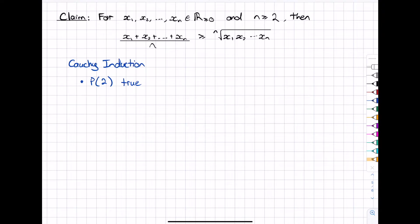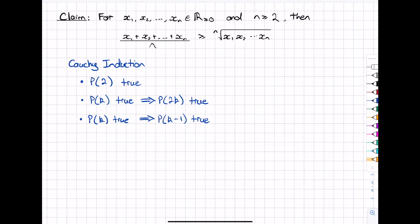The next step is where things differ. In regular induction we assume that if p of k is true then p of k plus 1 is true — we're proving p of k plus 1 conditionally on p of k. In Cauchy induction it's different: we show that if p of k is true then p of 2k is true. And then Cauchy induction has an extra step — we also show that if p of k is true then p of k minus 1 is true.